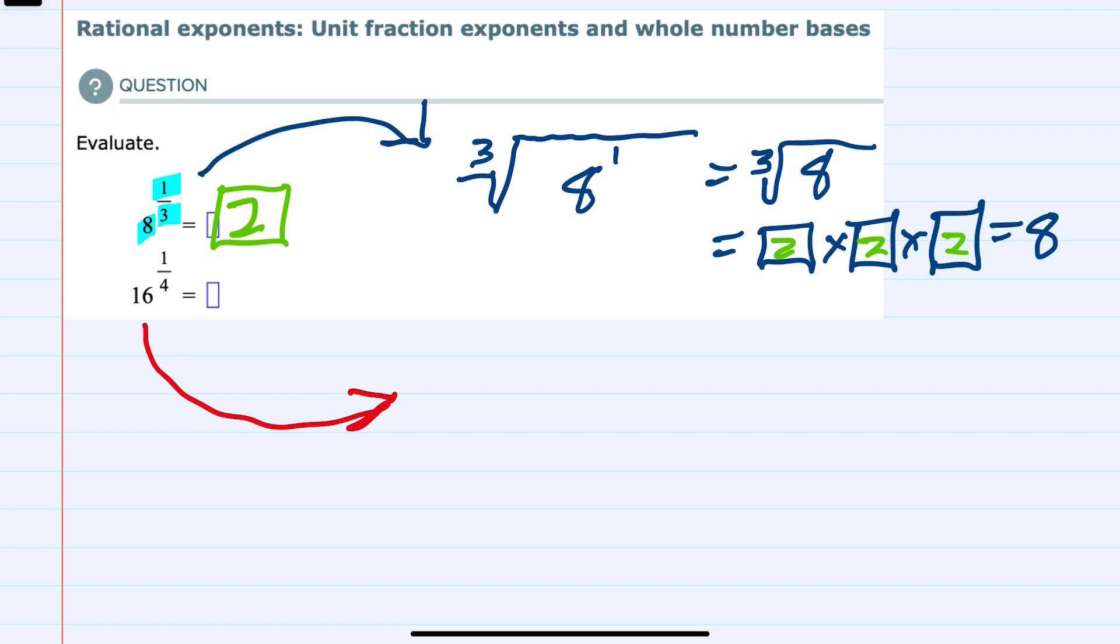And then for the second example, if we were to write that as a radical expression, we would again keep the base, 16. The denominator of the exponent becomes the root, so this would be a fourth root, and the numerator is still the power.